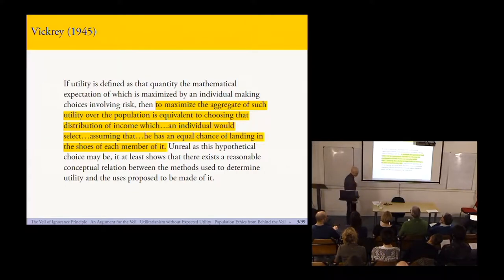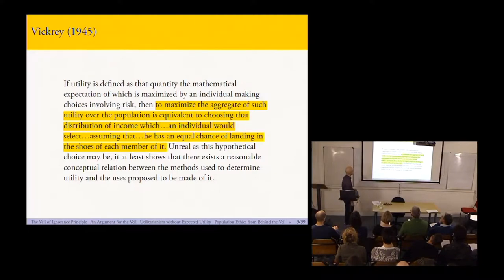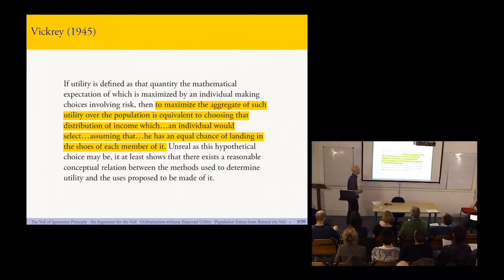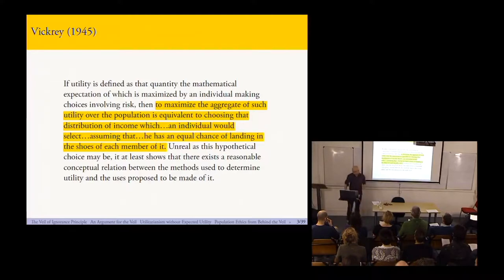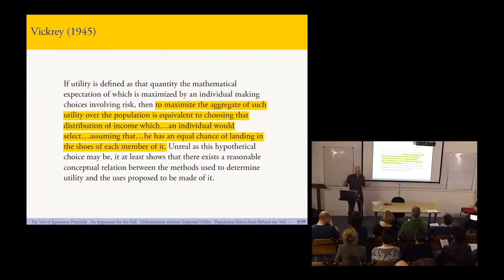He was writing relatively early in the history of modern decision theory — the book by von Neumann and Morgenstern had just come out the previous year — and Vickery was musing about the fact that the word 'utility' could be used in two different ways. One, we have utility as in expected utility theory, defined as that quantity the mathematical expectation of which is maximized by an individual making choices under risk. On the other hand, there's utility as in utilitarianism. It's tempting to think these might have something to do with each other, and he thought that something like the veil of ignorance would vindicate a connection between them.